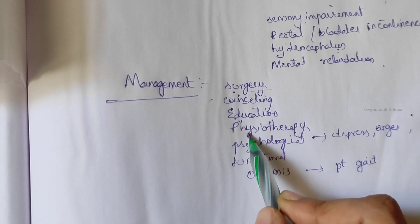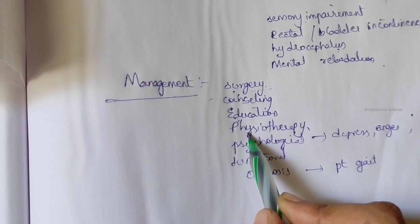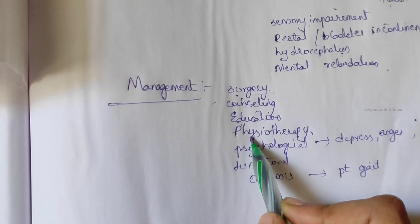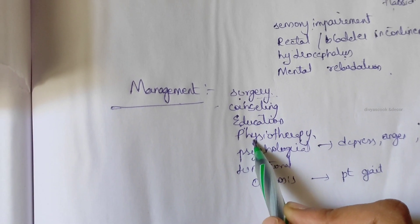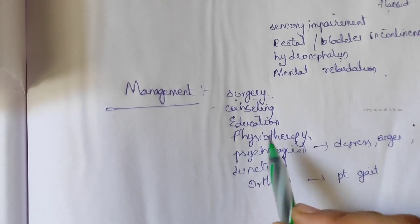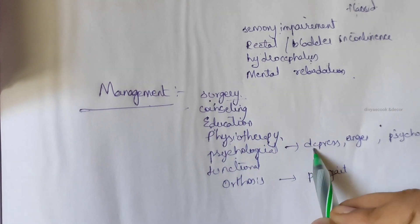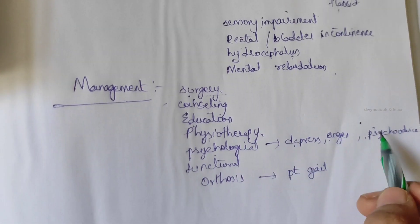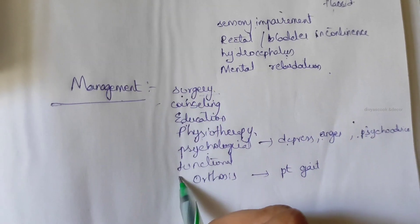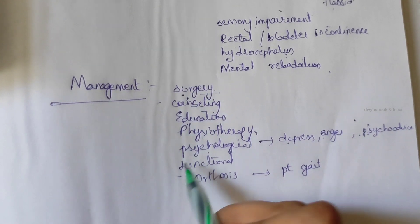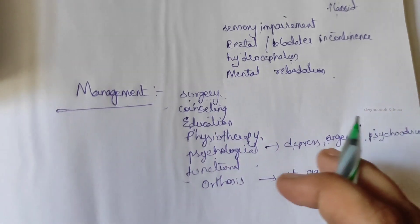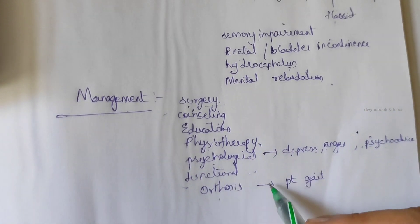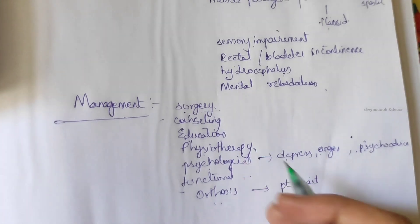Physiotherapy is used to deal with lack of movement or abnormal movement patterns and to prevent deformities by correcting positional treatment. Teaching parents passive movements is carried out to prevent contractures. Psychology support is given to prevent depression and anger. Functional activities at home are encouraged, and orthoses are prescribed for patients who need them.